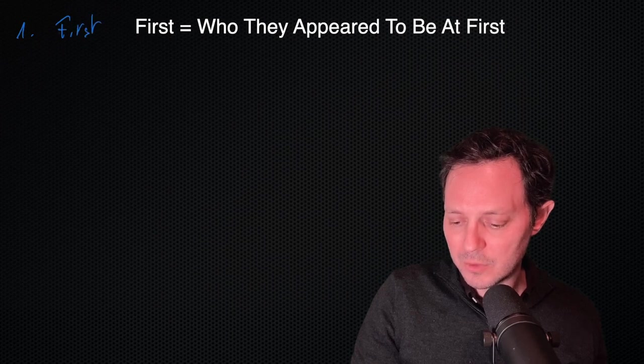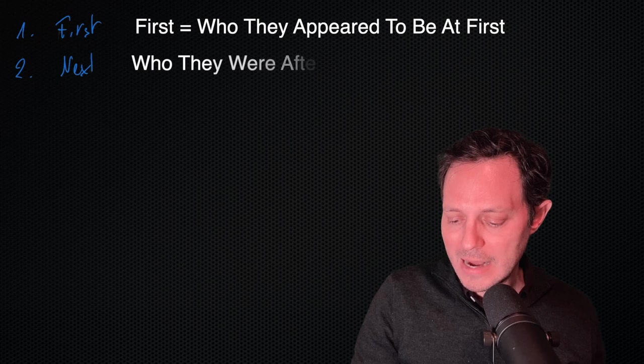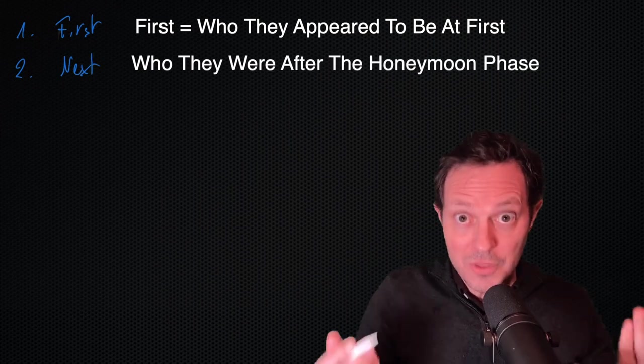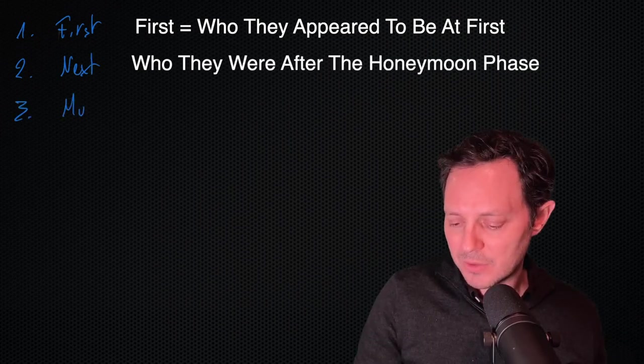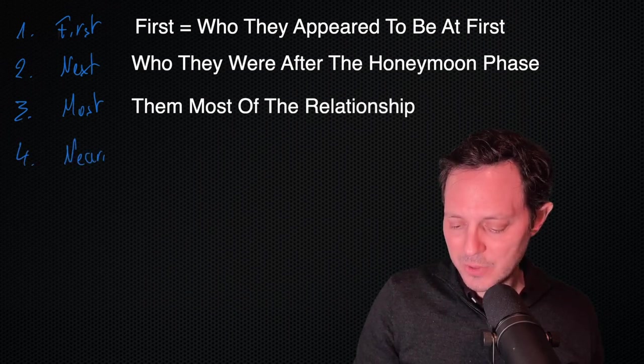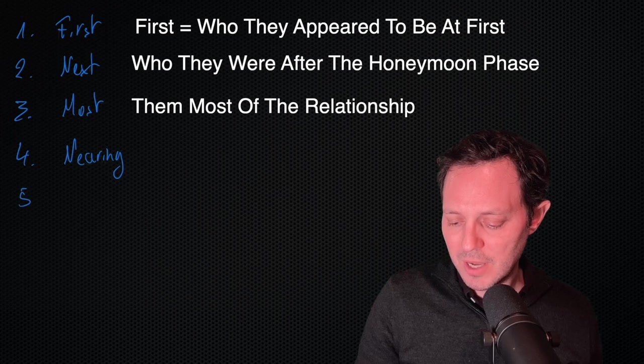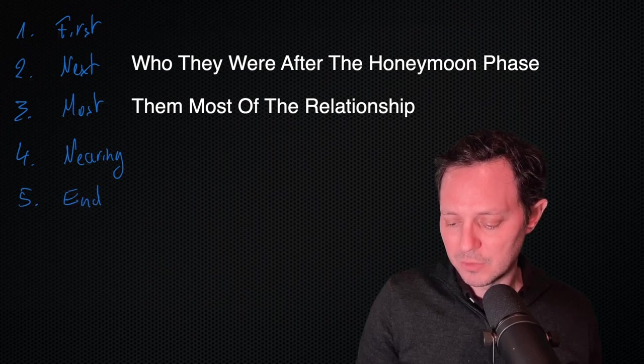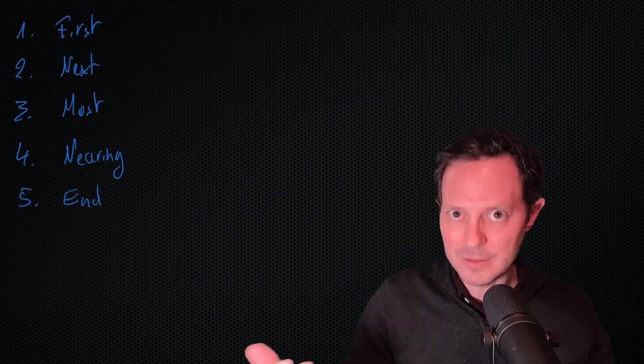The exercise is quite straightforward. You simply list the different people that you had a relationship with. So you start with the person who was at the beginning of the relationship, the first person that you met, and then you have the next step, what that was like, and then you've got the person, how they reacted during most of the relationship. You might have the person nearing the end of the relationship, and then the person at the end of the relationship, or when the relationship is over.